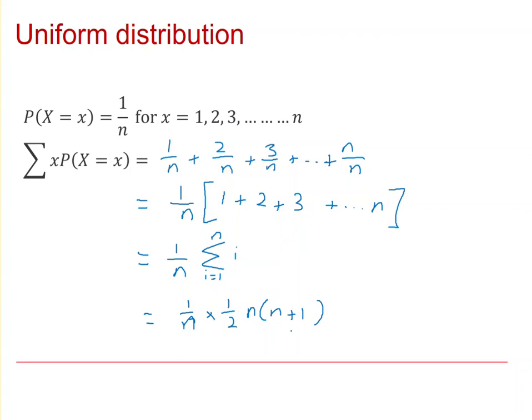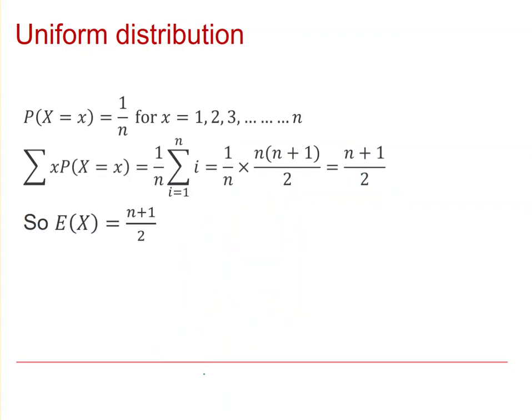So now I can simplify this. The n's will cancel, simply giving me n plus one over two. And that's the formula for any uniform distribution with n outcomes. Here it is typed up.